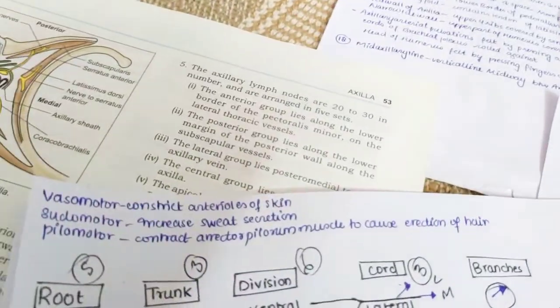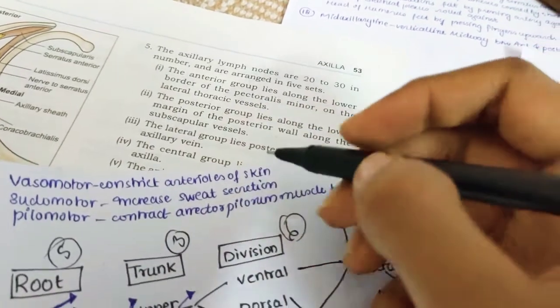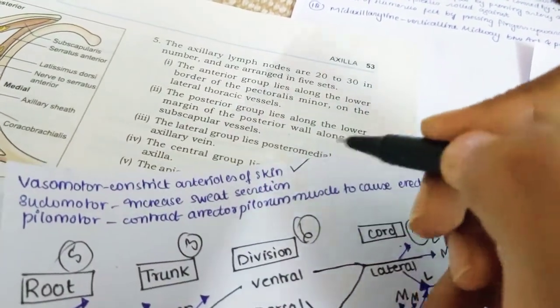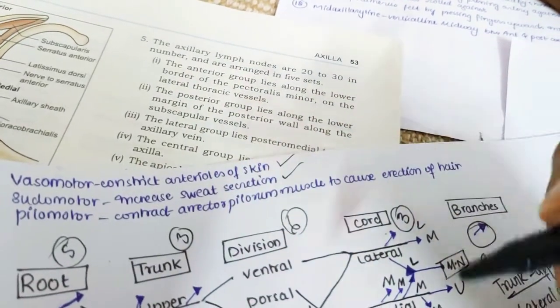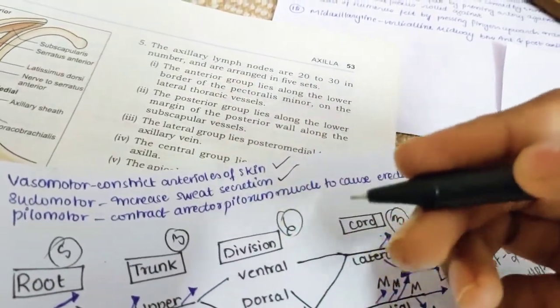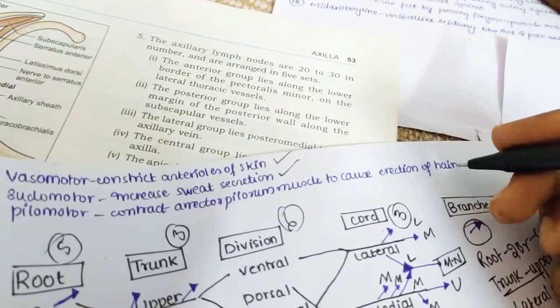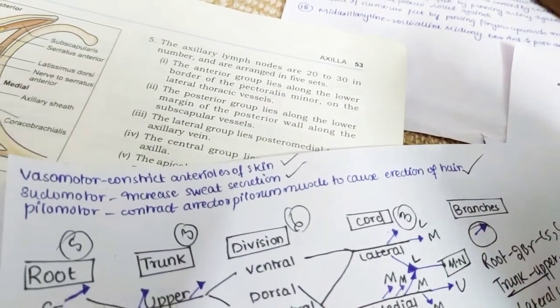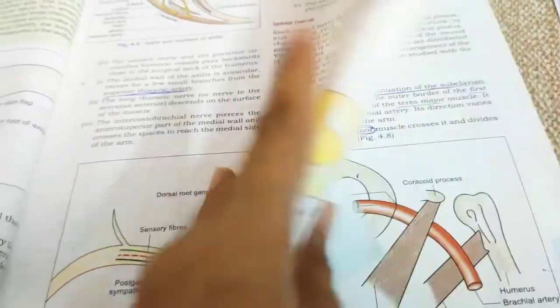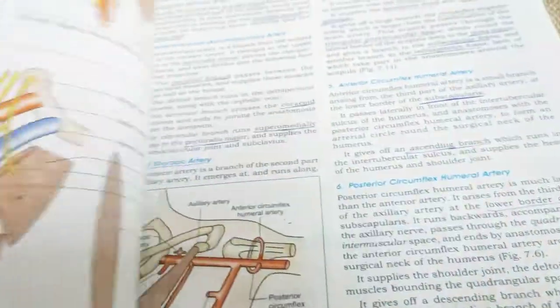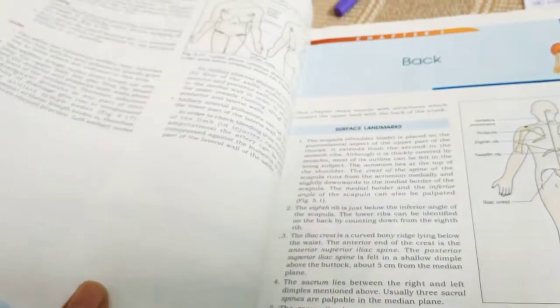The sympathetic fibers serve three functions in the skin: vasomotor fibers constrict the arterioles of the skin; sudomotor (pseudomotor) fibers increase sweat secretion; and pilomotor fibers contract the erector pili muscles to cause erection of hair. This completes the brachial plexus and its sympathetic innervation. Next, we will cover the axillary artery, axillary vein, lymphatics, and clinical anatomy to complete the axilla topic.